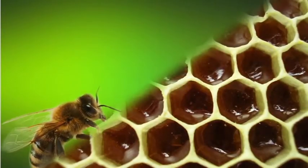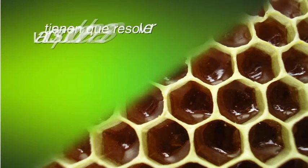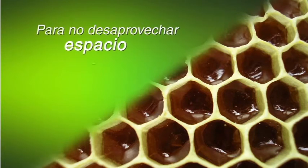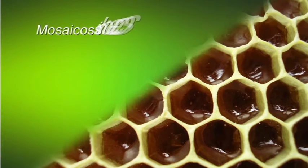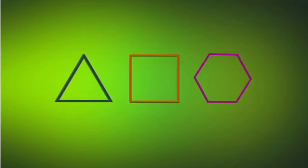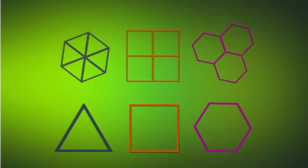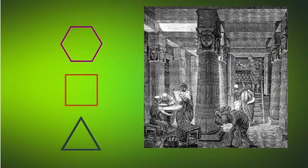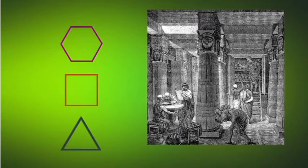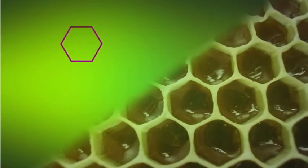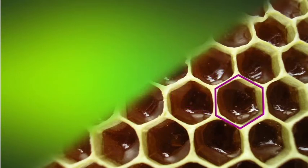Retomemos el caso de las abejas. Cuando estas construyen sus panales, tienen que resolver varios problemas para guardar su miel de forma óptima. Para no desaprovechar espacio y recurso, conviene construir los panales como mosaico sin hueco, lo cual se puede lograr con triángulos, cuadrados o hexágonos. El matemático griego Papus de Alejandría demostró que entre todos los polígonos regulares con el mismo perímetro, encierra más área el que tenga mayor número de lados. Es por esta razón que las abejas construyen sus celdas de forma hexagonal, ya que gastando la misma cantidad de cera, consiguen mayor superficie para guardar su miel.